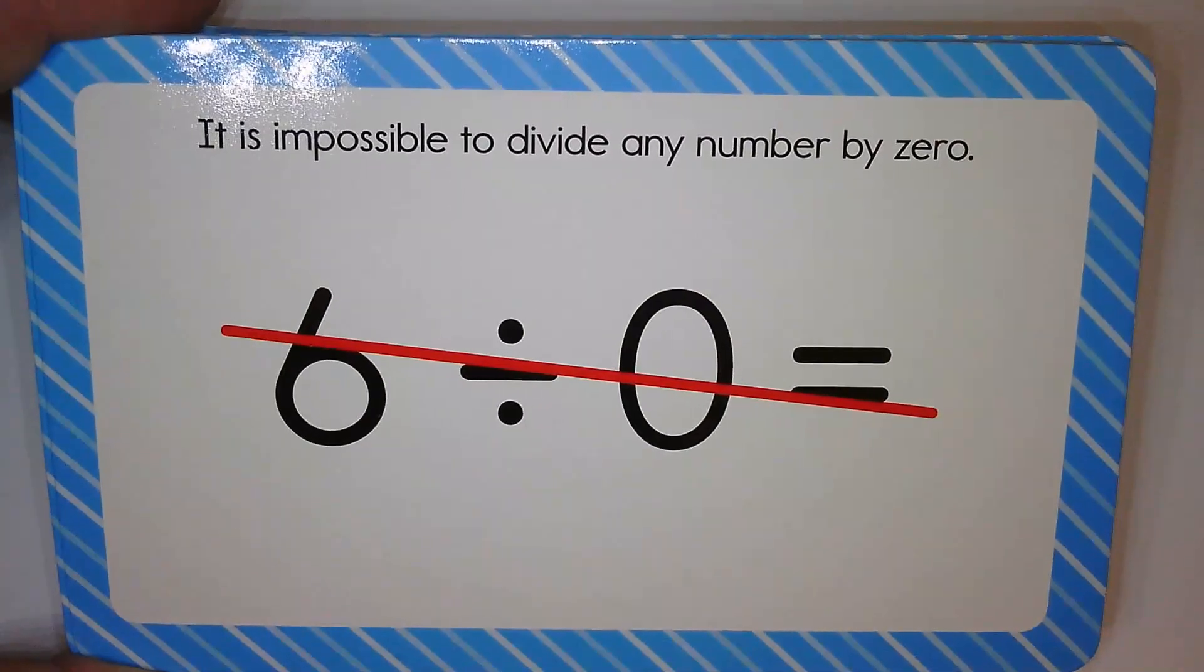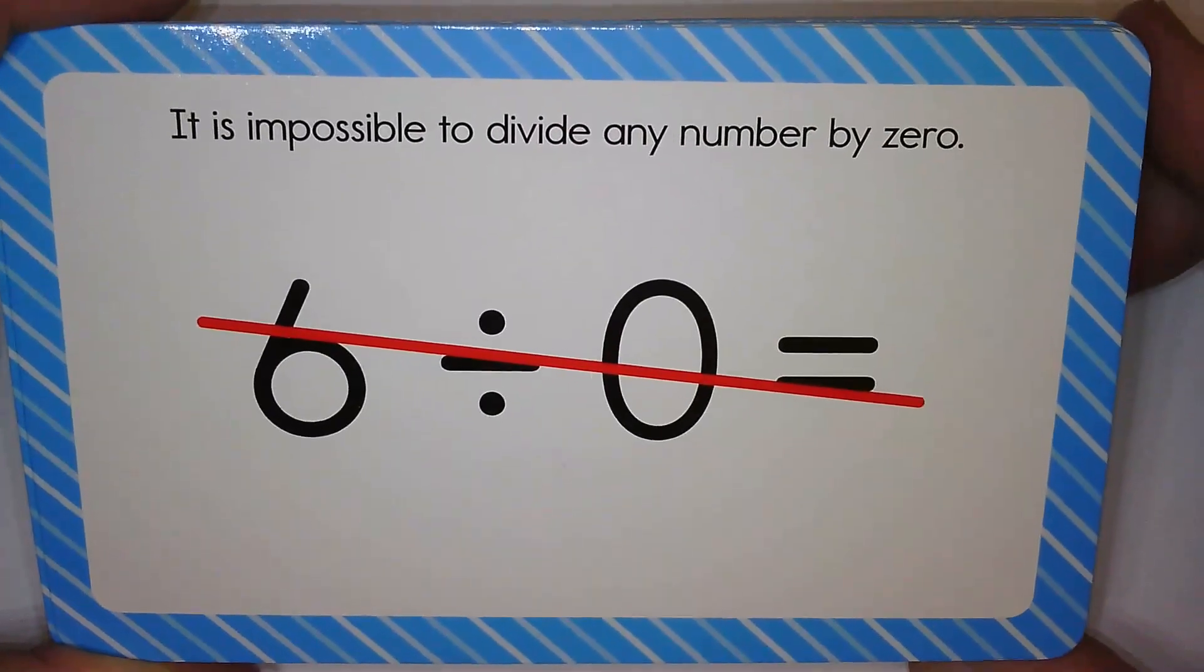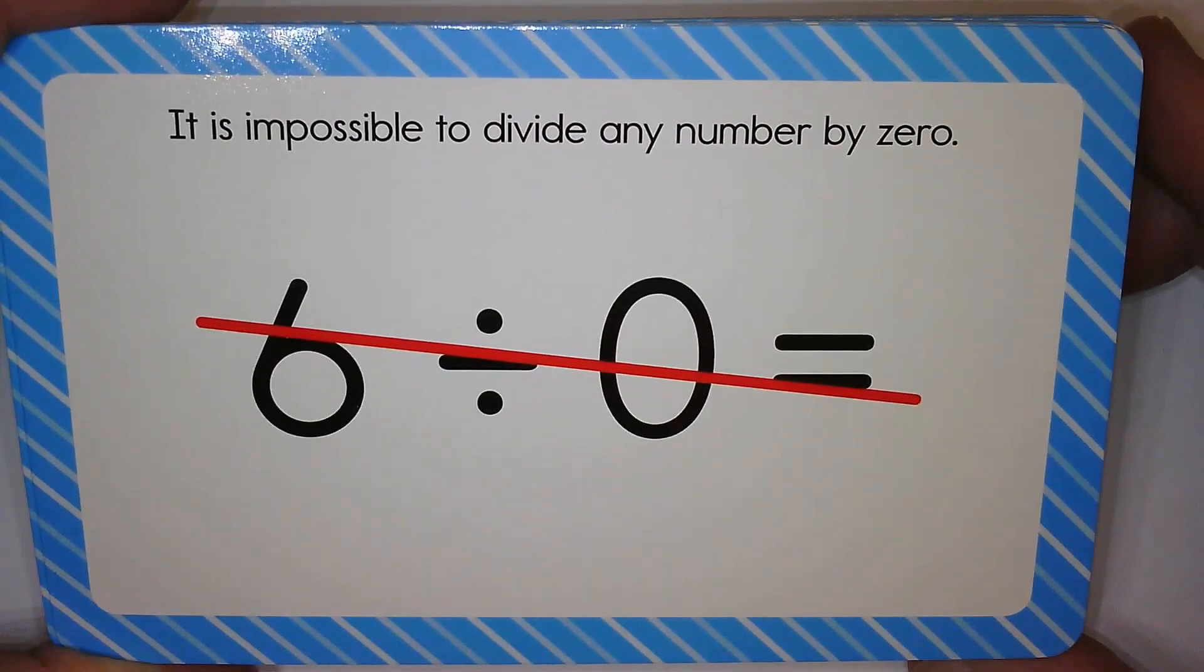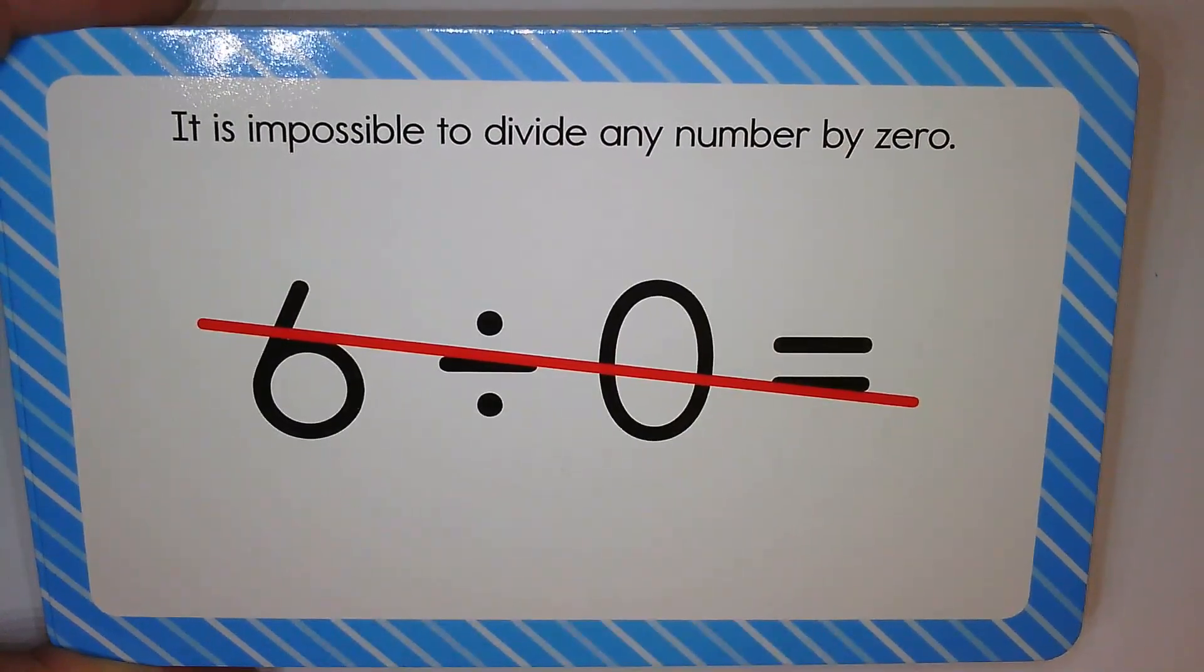Here we go. All right, first card is: it is impossible to divide any number by zero. So if you ever see something divided by zero, it just can't be done. There is no answer, it can't be done.